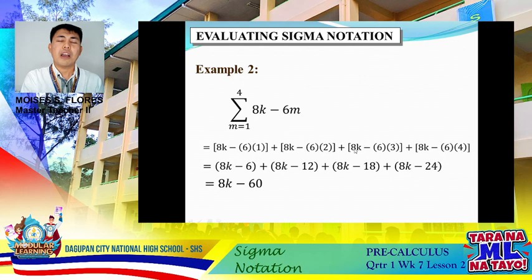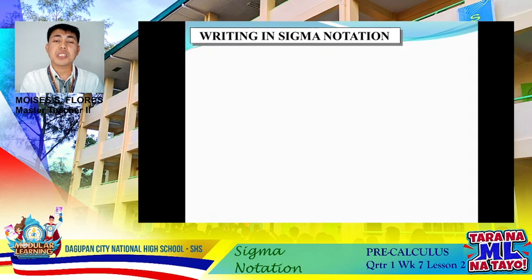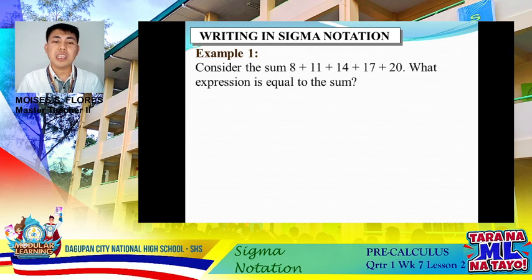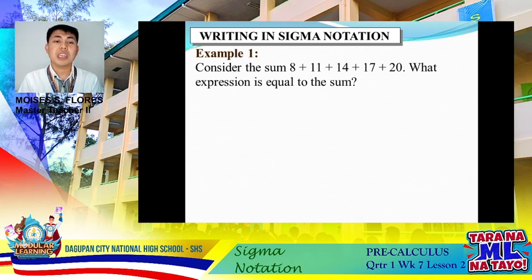Now it's the reverse — we are going to write a series in sigma notation. In number one, the given is 8 + 11 + 14 + 17 + 20. We are asked to represent it in sigma notation. Let's observe what kind of series this is — is it arithmetic or geometric?